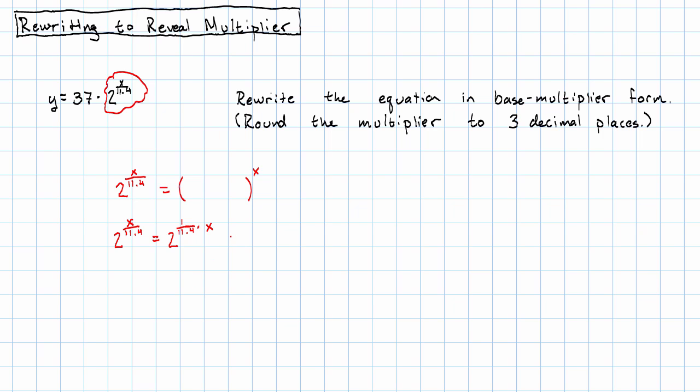But now the power of a power rule says that we can, instead of multiplying the exponents, apply the first exponent, and then apply the second exponent.